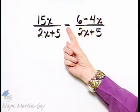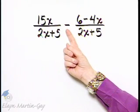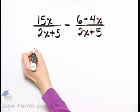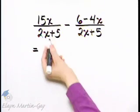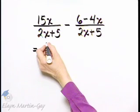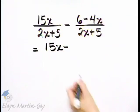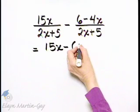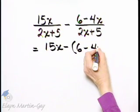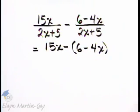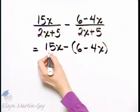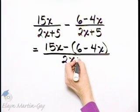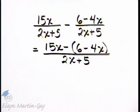Now be very, very careful because the operation is subtraction. In other words, because the denominators are the same, what we have is numerator 15X minus the entire second numerator, which actually is in parentheses because I am subtracting that entire second numerator, all over that common denominator of 2X plus 5.